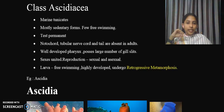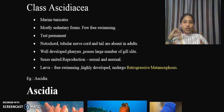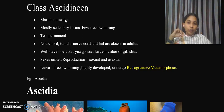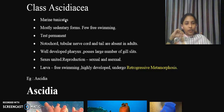We will study in detail what retrogressive metamorphosis is, and the difference between the adult stage and the larval stage of members of Class Ascidiacea. Moving on to Class Ascidiacea — most members are marine. All members of Subphylum Urochordata are commonly known as tunicates, and all members of this class are exclusively marine.